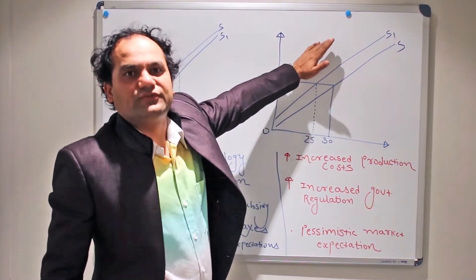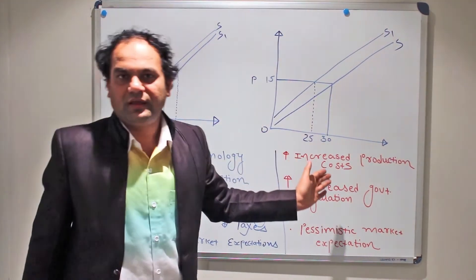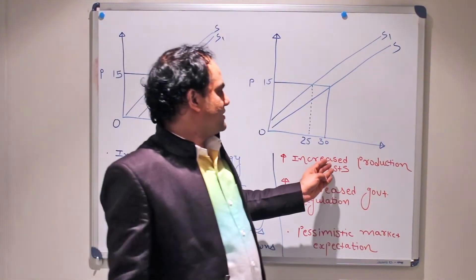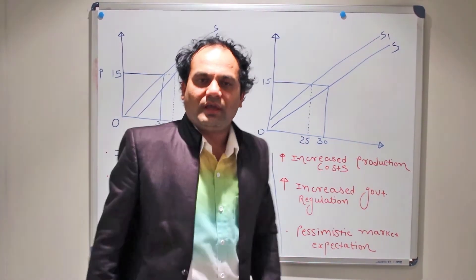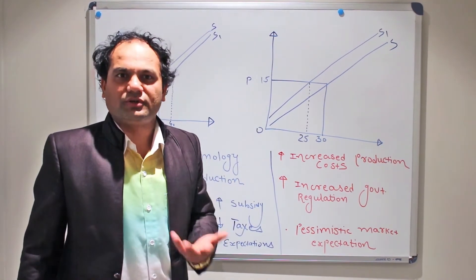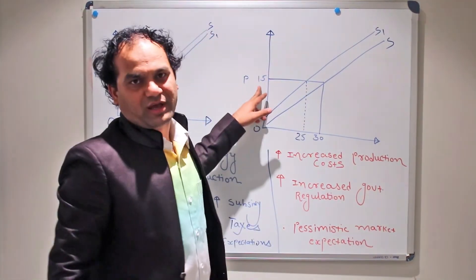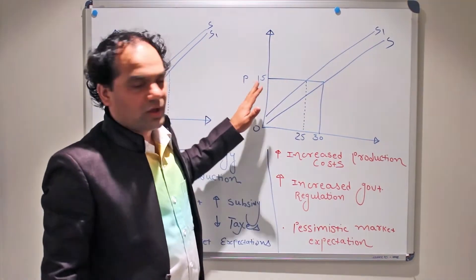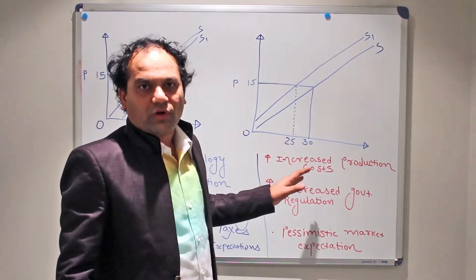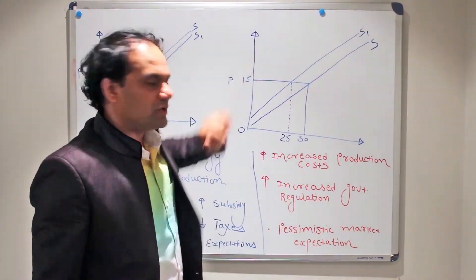Now, when does the supply curve move to its left? First: increased production cost. If somehow the cost of production increases, it is an unfavorable situation for the organization or industry. In that scenario, production will drop down even though there is no drop in price — the price is stable. Because this is something unfavorable happening in the industry, it will move the supply curve to its left.